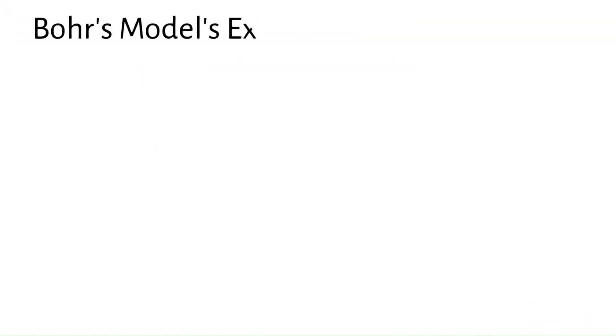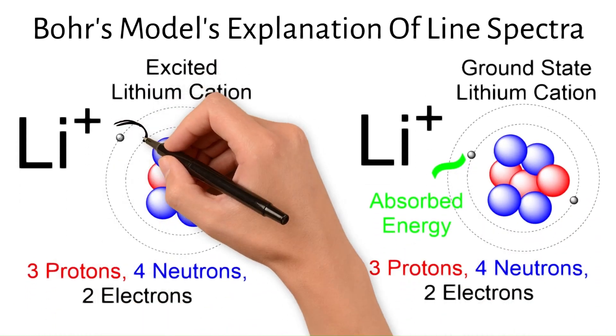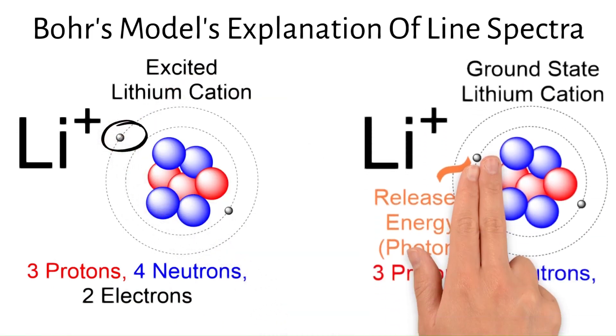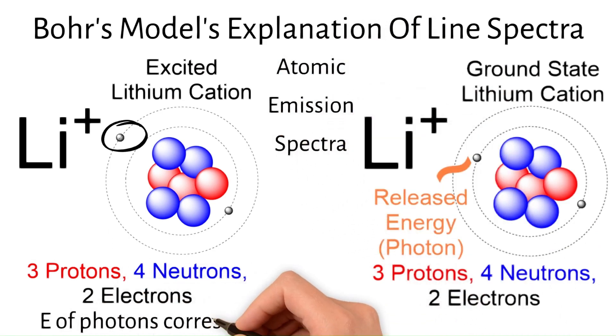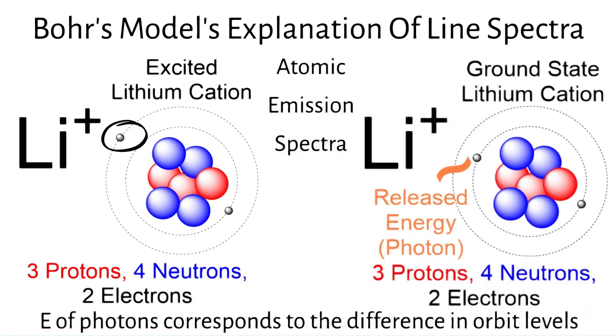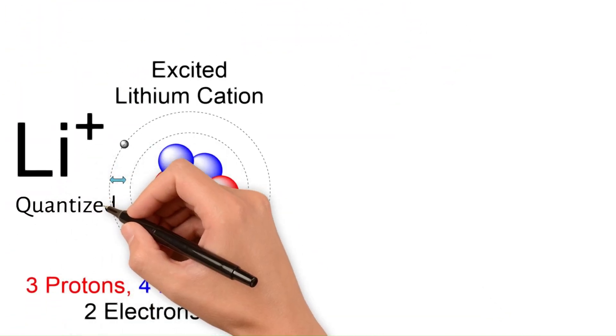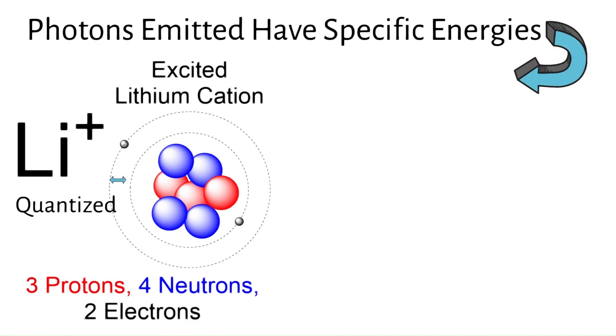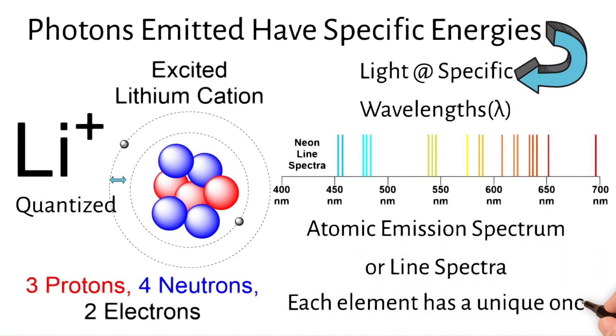Now let's get to Bohr's model explanation of line spectra. When electrons are excited by absorbing energy, they jump to higher energy levels. As they return to lower energy levels, they emit photons, and this is called atomic emission spectra or fluorescence. The energy of these photons corresponds to the difference in orbit levels involved in the transition. Because the energy levels in atoms are quantized, the photons emitted during transitions have specific energies. This results in the emission of light at specific wavelengths producing a series of discrete lines known as the atomic emission spectrum or line spectra. Each element has a unique line spectrum serving as a fingerprint for identifying atomic substances.